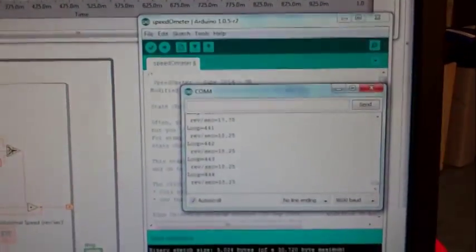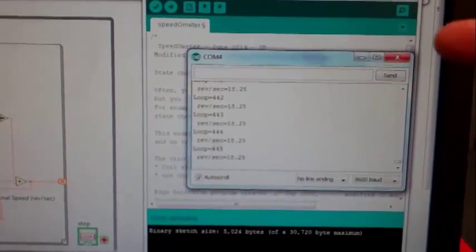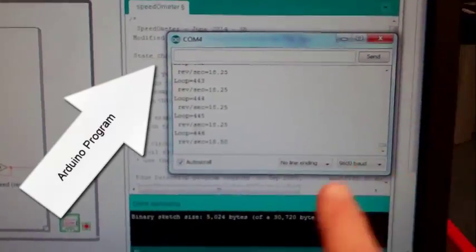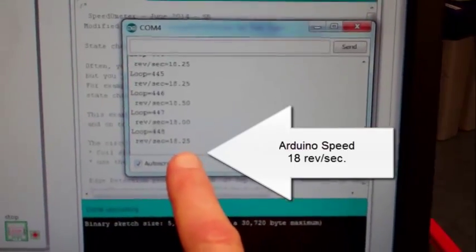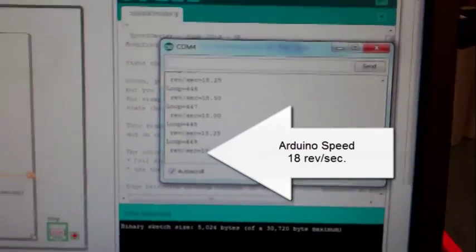There's another program that's running simultaneously. It's an Arduino program. And it's also measuring the speed at 18 revolutions per second.